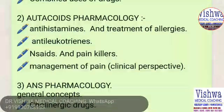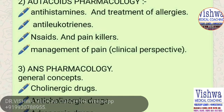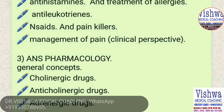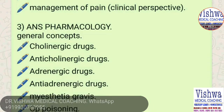The second topic is autacoid pharmacology, in which we discuss short topics such as anti-allergics, anti-histaminics, anti-leukotrienes, treatment of allergies, non-steroidal anti-inflammatory drugs, painkillers, and the clinical topic of management of pain. In this course we take all clinical topics together with pharmacology, making it clinical pharmacology — more interesting than purely theoretical pharmacology. Along with the drugs, the related disease will also be covered.